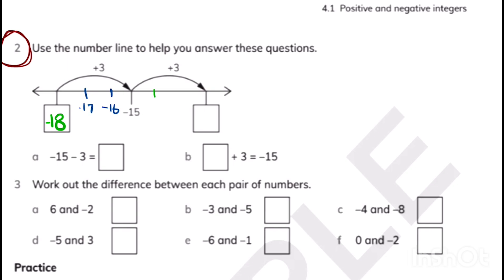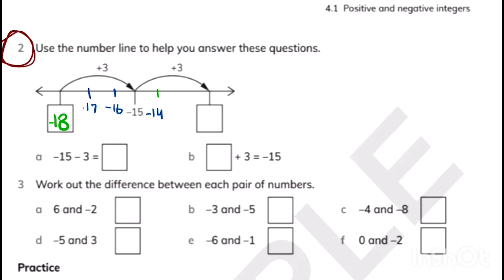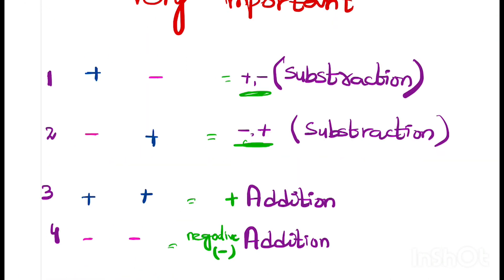If we move forward three steps from minus 15, we get minus 14, minus 13, and the third step is minus 12. Now let's understand with integers: because we have two same signs, we add them. 15 plus 3 is 18, and the sign is negative because both numbers have a negative sign, giving us minus 18.